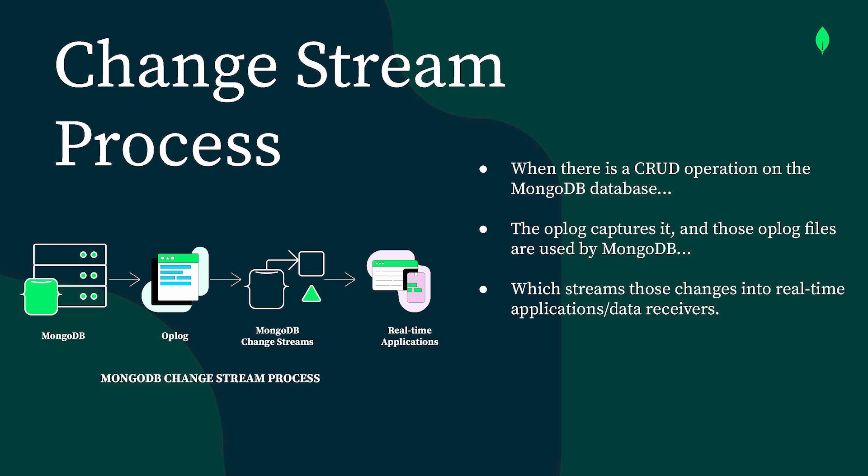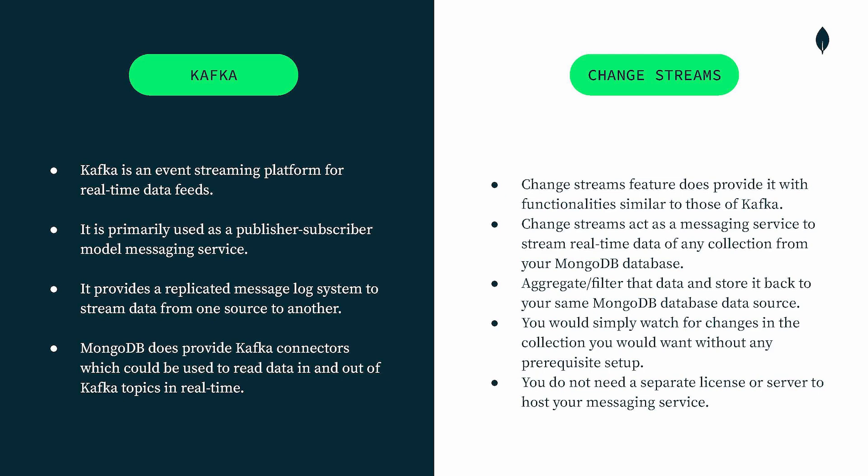This is how the actual Change Stream process works. Whenever there's a change happening on your instance where you are watching for Change Stream operations, all the data written to the Oplog is then moved through MongoDB Change Stream — which is essentially an API — into the real-time applications or the target entity where you want to send the data. Kafka is also an event streaming platform for real-time data feed, but its use is for a much broader scope.